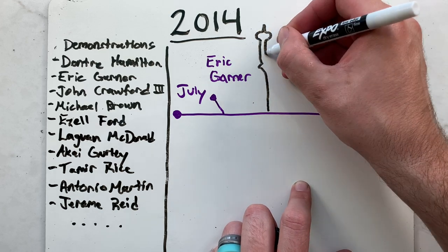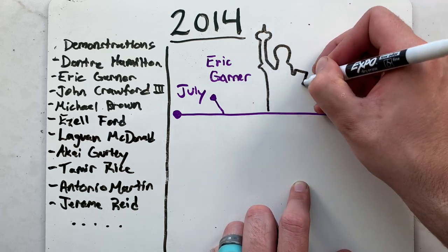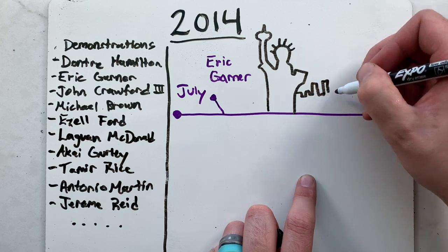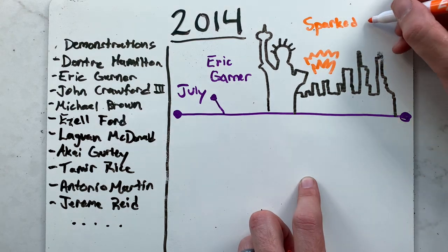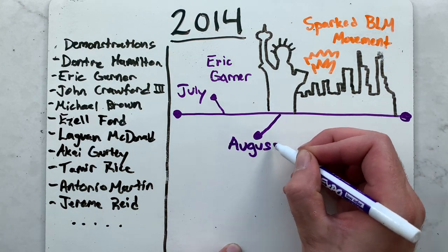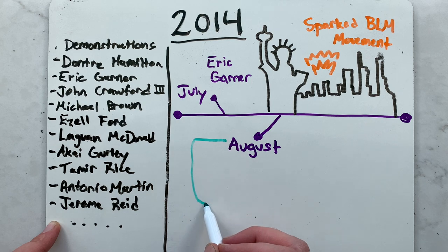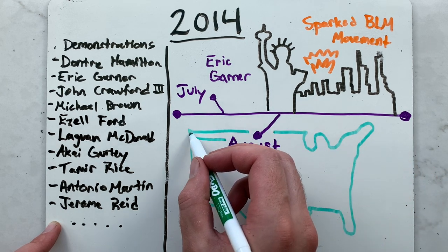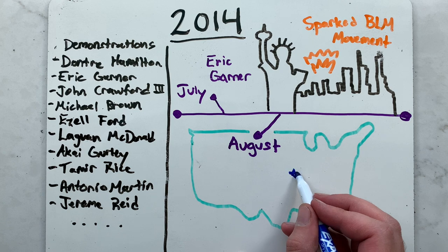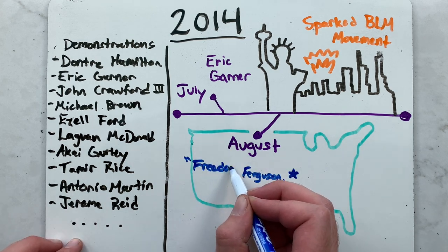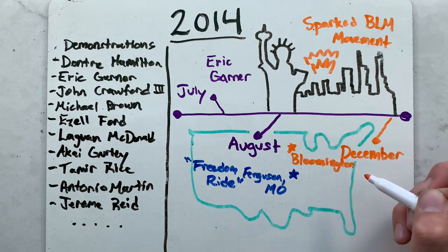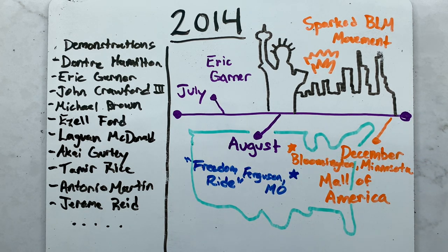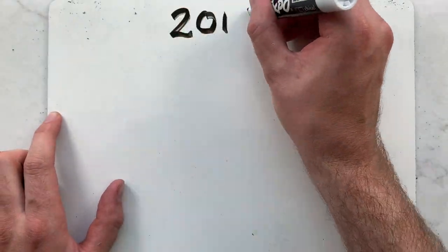In July, Eric Garner died in New York City after a New York City Police Department officer put him in a chokehold while arresting him. Garner's death has been cited as one of several police killings of African Americans that sparked the Black Lives Matter movement. In August, during Labor Day weekend, Black Lives Matter organized a Freedom Ride that brought more than 500 African Americans from across the United States into Ferguson, Missouri to support the work being done by local organizations. In December, 2,000 to 3,000 people gathered at the Mall of America in Bloomington, Minnesota to protest the killings of unarmed Black men by police.